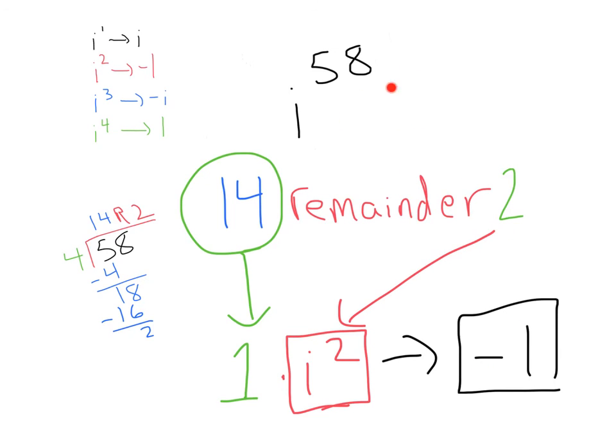If you feel confident in simplifying these without doing division, that's totally fine. But if you have a little trouble with simplifying and finding out what is a power of 4 and what's not, this is always a good method to be sure. Divide your power by 4 and use that remainder to determine what it's going to simplify to.